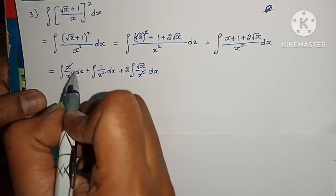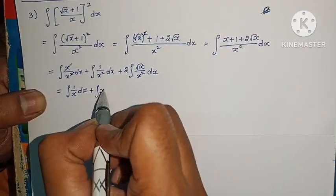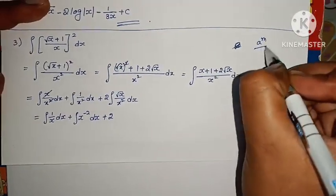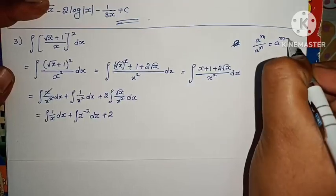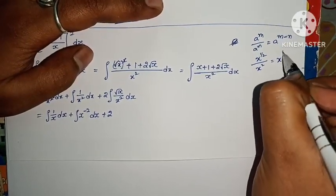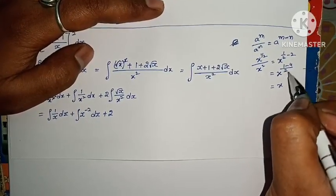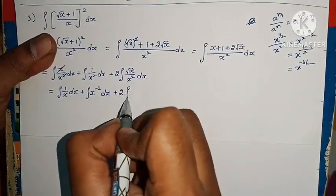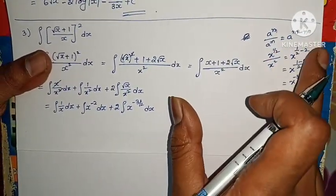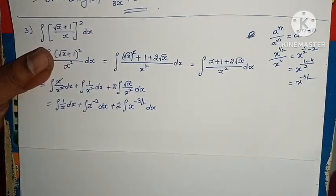Cancelling x in the first term: integral 1 by x dx. Plus integral x power minus 2 dx. For the last term, root x by x squared: root x is x power 1 by 2, so using a power m by a power n equals a power m minus n, we get x power 1 by 2 minus 2 equals x power minus 3 by 2. So plus 2 into integral x power minus 3 by 2 dx.